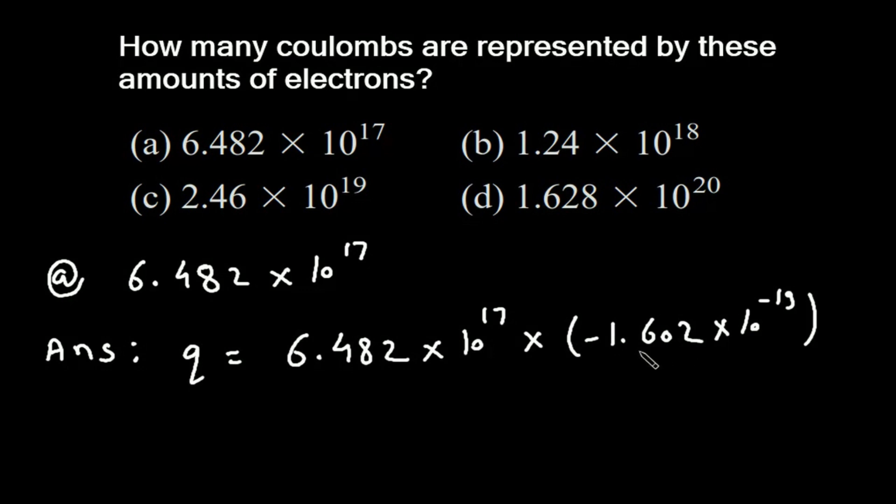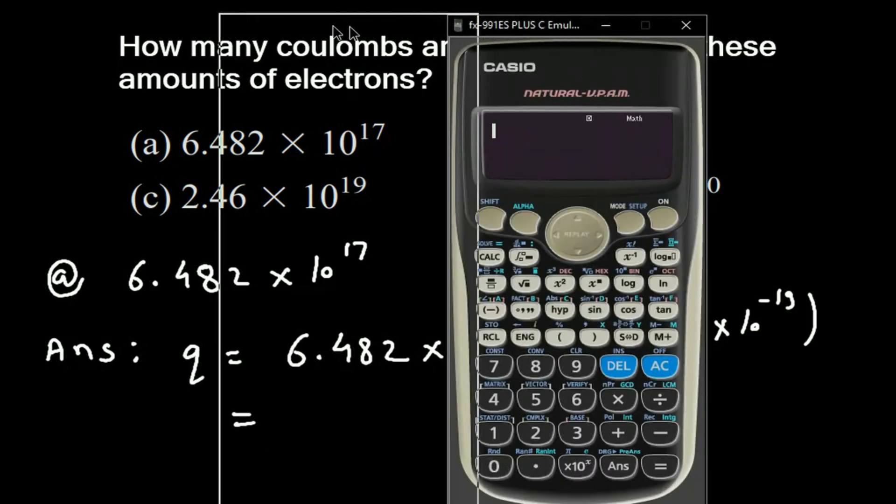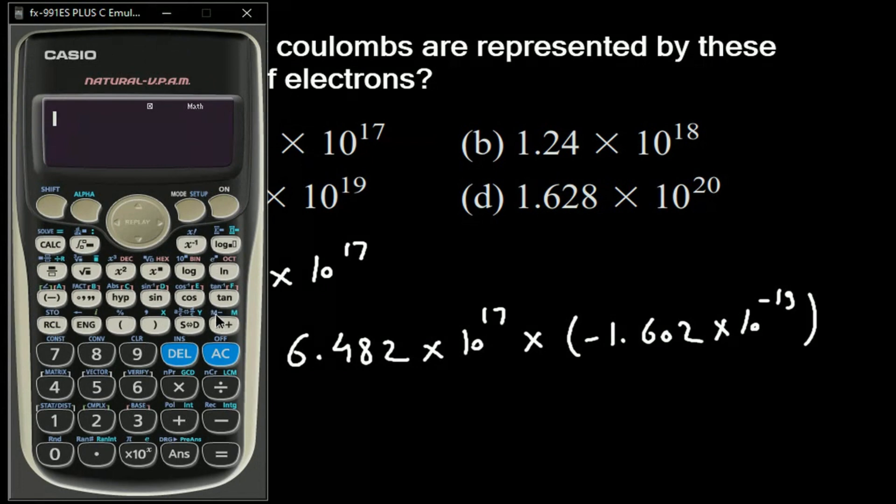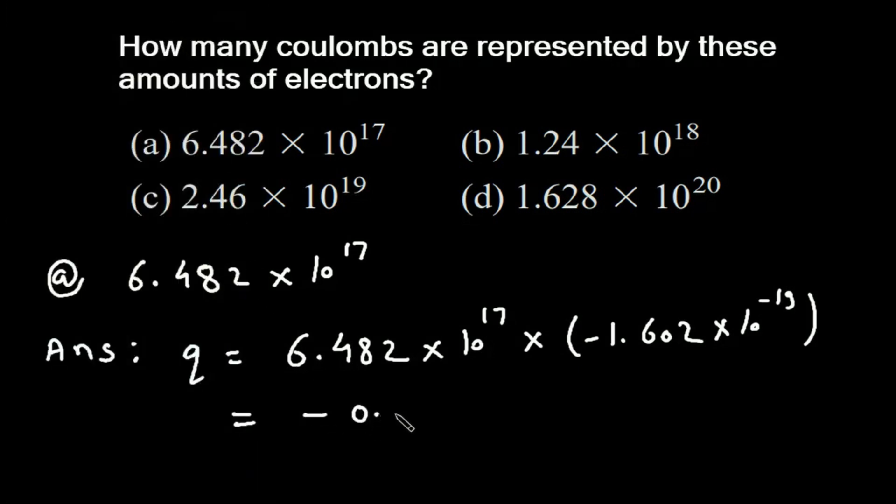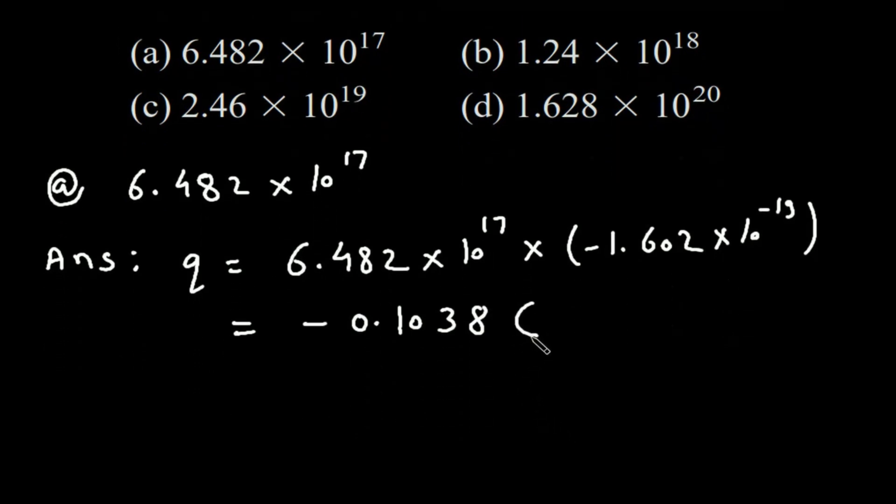This is how much charge one electron has. This will be 6.482 × 10^17 times minus 1.602 × 10^-19, which equals minus 0.1038 Coulombs. Coulomb is represented by capital C.